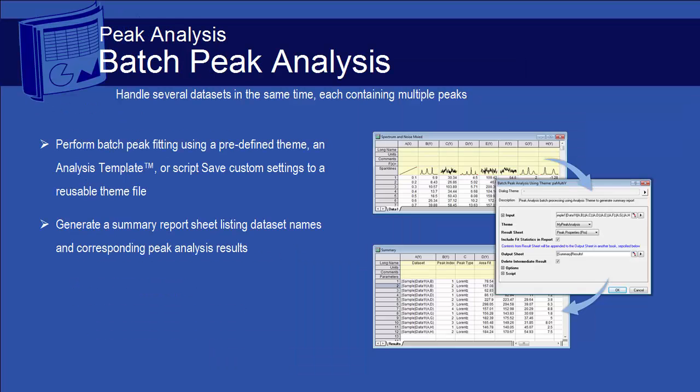The Batch Peak Analysis tool in Origin Pro allows you to analyze one dataset and save a theme, and then utilize that theme to process multiple other datasets. Each dataset can contain multiple peaks, and the batch analysis can cover baseline correction, peak detection, and peak fitting.